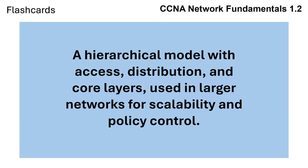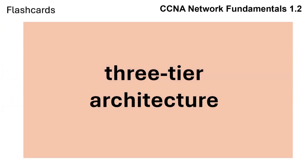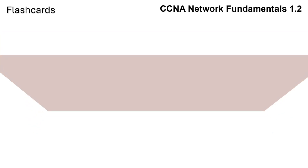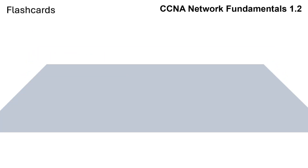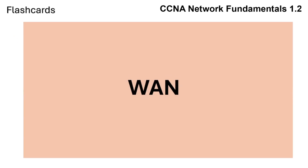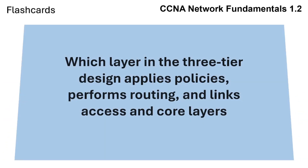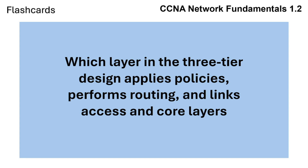A hierarchical model with access, distribution, and core layers used in larger networks for scalability and policy control. Connecting a company's offices in different cities using MPLS or VPN over the internet is an example of a WAN. Which layer in the three-tier design applies policies, performs routing, and links the access and core layers?